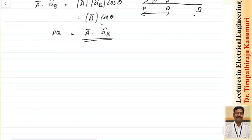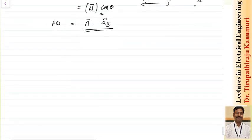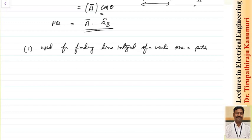So I can write that pq equals vector a dot product with the unit vector in the direction of b. That means if I want to get the scalar projection — what is the length of the vector projected on the second vector — I can obtain it by taking the particular vector dot product with the unit vector in the direction where you want to project.